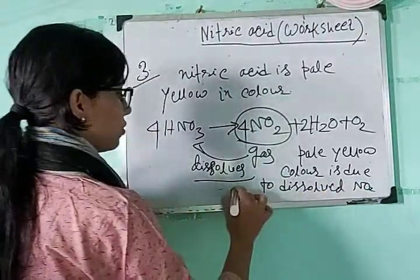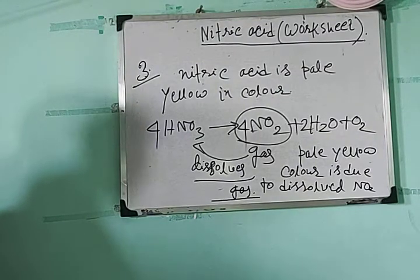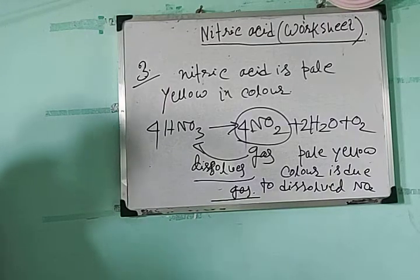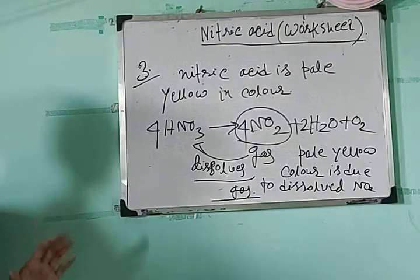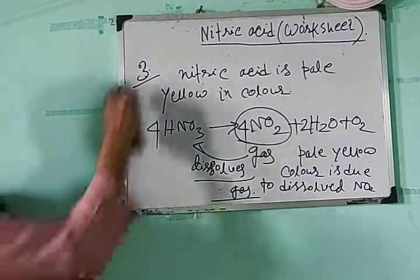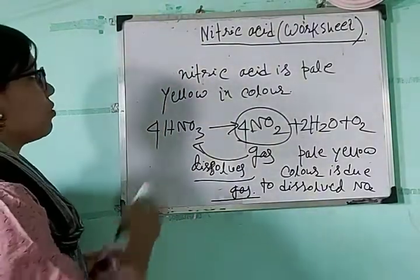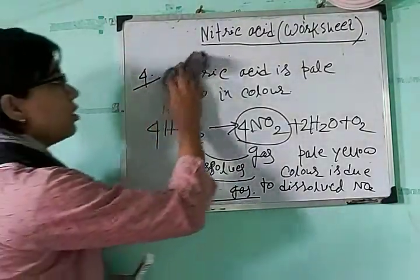So that is question number three. Question number four is: how can the yellow color of nitric acid be removed? Suppose you are trying to prepare pure nitric acid that does not contain any dissolved nitrogen dioxide — how can this yellow color be removed? There are two processes.